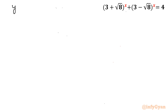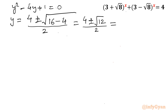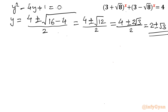We solve y² - 4y + 1 = 0 using the quadratic formula: y = (-b ± √(b² - 4ac)) / 2a = (4 ± √(16 - 4)) / 2 = (4 ± √12) / 2. Since √12 = 2√3, this gives y = (4 ± 2√3) / 2 = 2 ± √3. So the two solutions are y = 2 + √3 and y = 2 - √3.